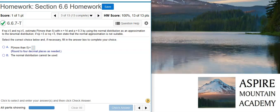Here's our problem statement. If np is greater than or equal to 5 and nq is greater than or equal to 5, estimate the probability of more than 5 with n equals 14 and p equals 0.3 by using the normal distribution as an approximation to the binomial distribution. If np is less than 5 or nq is less than 5, then state that the normal approximation is not suitable.